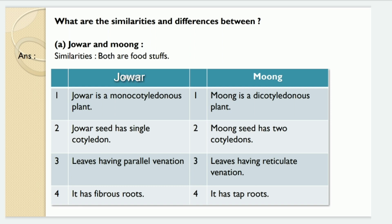Now question number three: What are the similarities and differences between jawar and moom, onion and coriander, leaves of banana and mango, coconut tree and jawar stalk plant? The similarity between jawar and moom is that both are food crops. The differences are: jawar is a monocotyledonous plant and moom is a dicotyledonous plant. Jawar seeds have a single cotyledon but moom seeds have two cotyledons. Jawar leaves have parallel venation and moom leaves have reticulate venation.